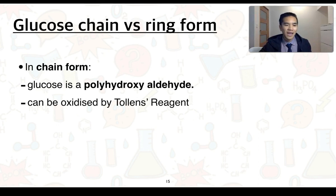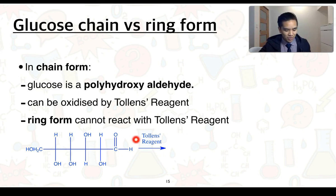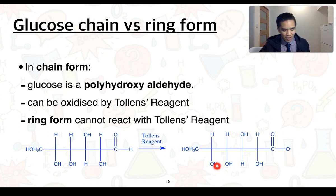So here we have the structure of glucose represented in a slightly different way. And we know that Tollens' reagent is an oxidizing agent under alkaline conditions. So it's going to convert this aldehyde into a carboxylate anion. Essentially, everything else stays the same. And so there we have our structure of glucose in the chain form reacting and forming the carboxylate anion, whereas the ring form is unable to react with Tollens' reagent.